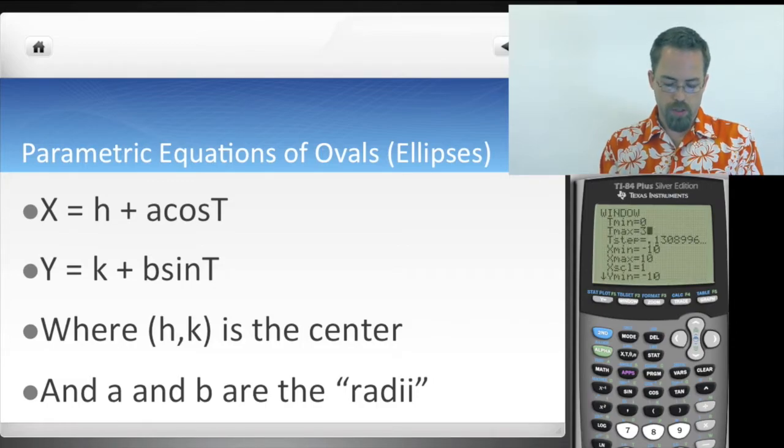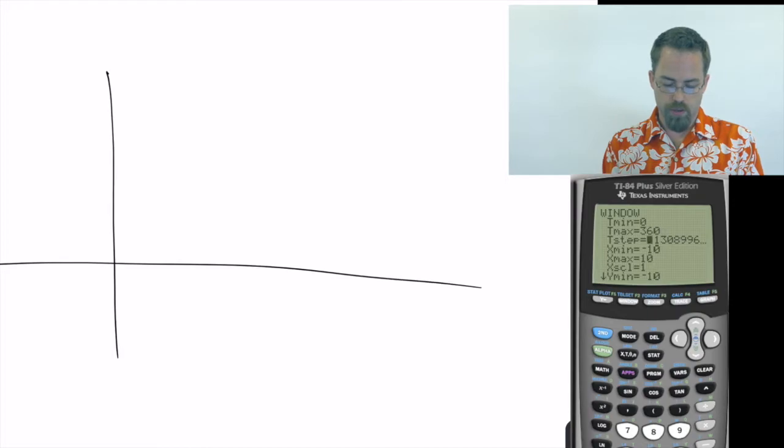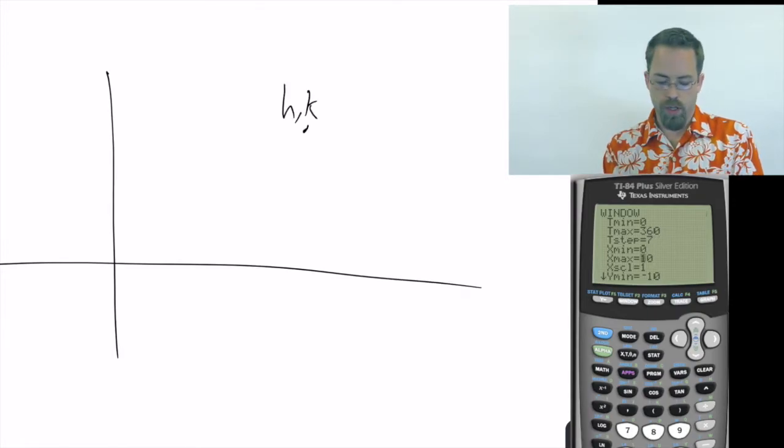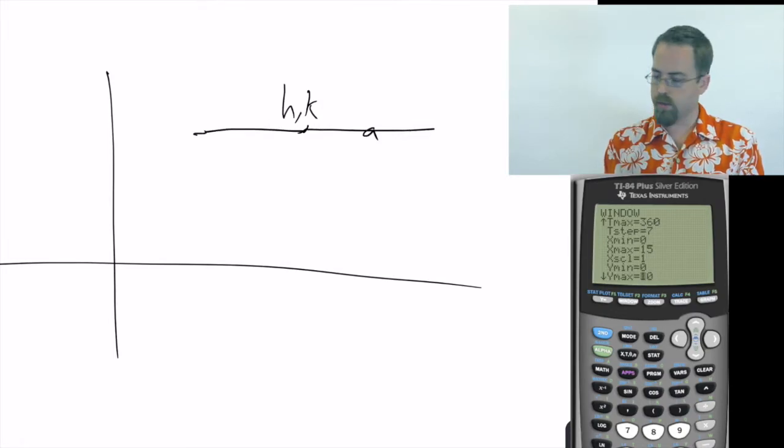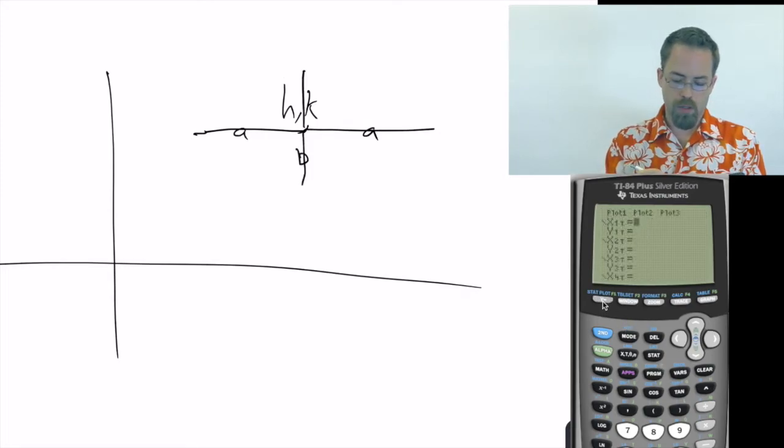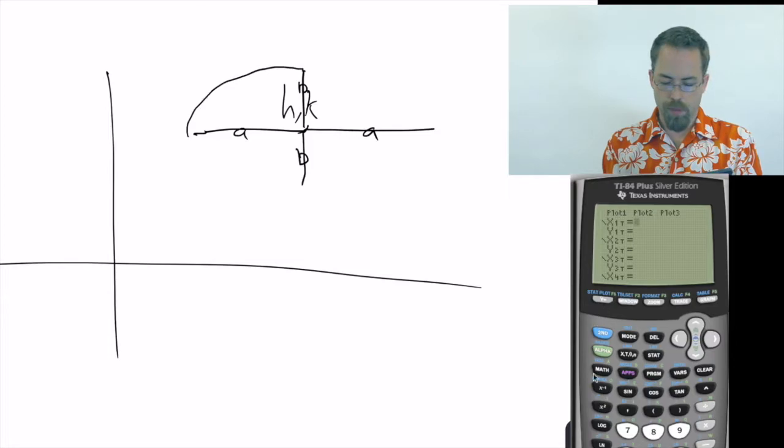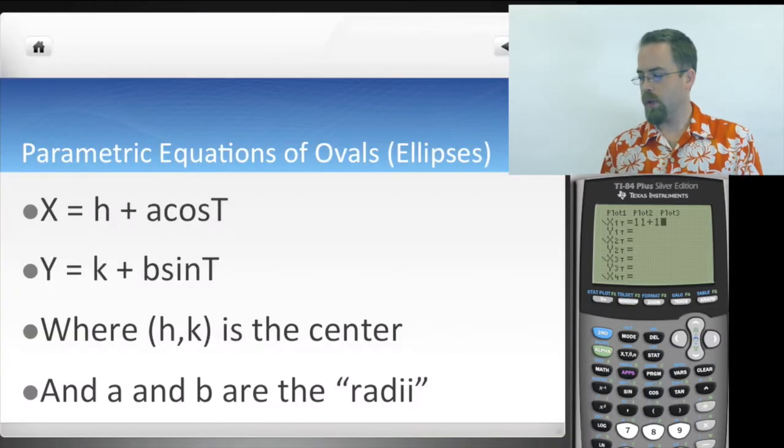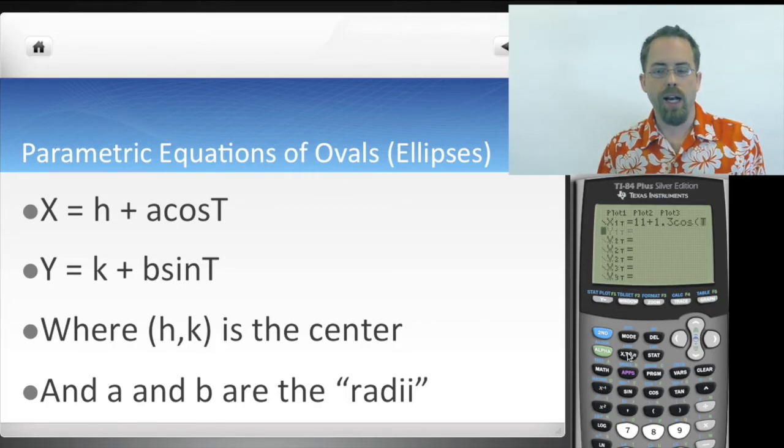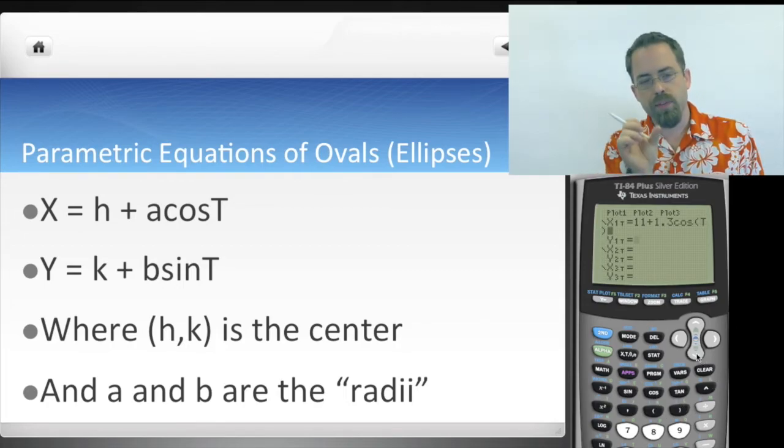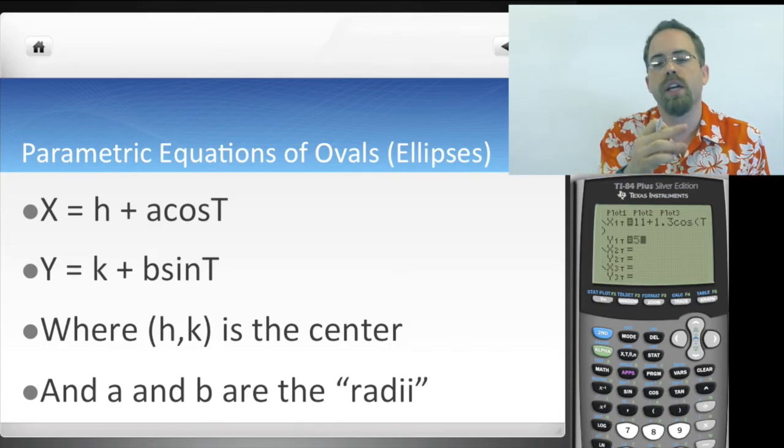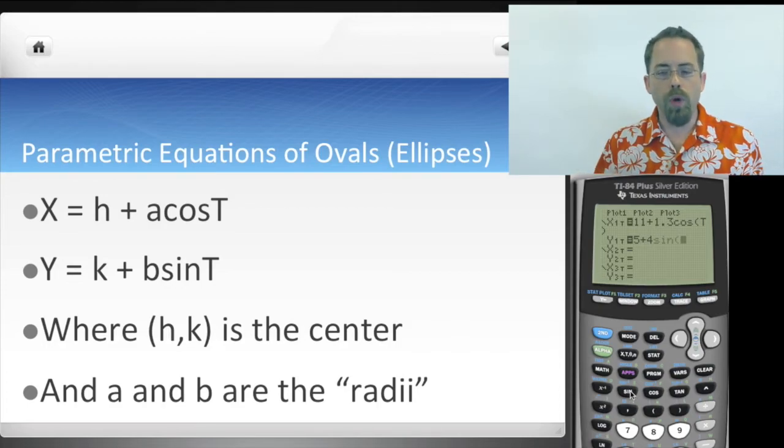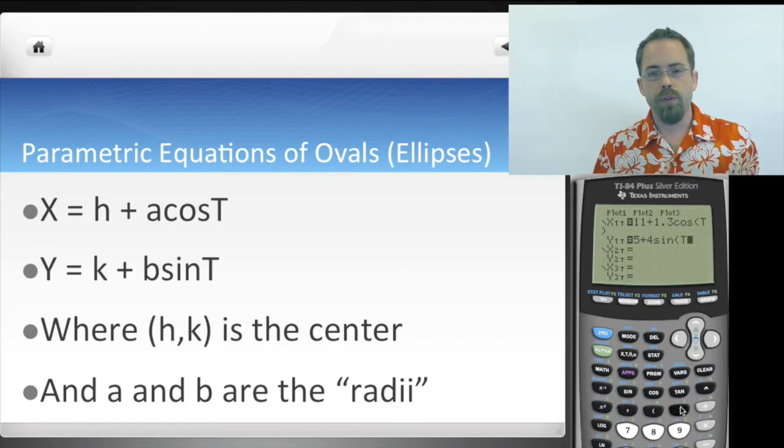So, we can move these left and right with our traditional sort of H and K, and that will get us an oval that will have a center at H and K. And then we're going to end up going A to the left and to the right in the X direction, and B up and down in the Y direction. And then we will make our funky football there. Okay? So, these two radii are the distance from the center to the edge in the Y direction.